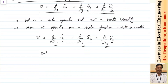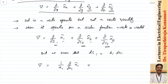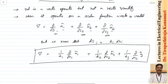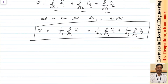We know that ds_i is equal to h_i times du_i. So I can define my del operator (gradient) as: 1/h1 · ∂/∂u1 in the direction of a1, plus 1/h2 · ∂/∂u2 in the direction of a2, plus 1/h3 · ∂/∂u3 in the direction of a3. Because you know the values of h1, h2, h3 and the coordinates u1, u2, u3, just substitute them and you will get the result for different coordinate systems.